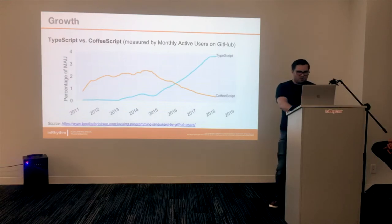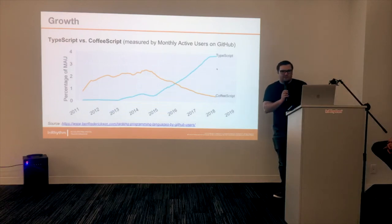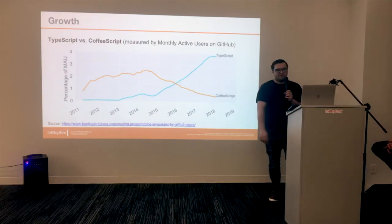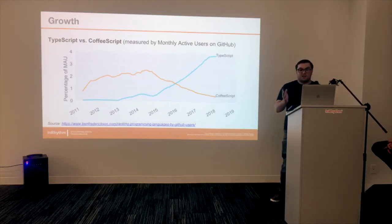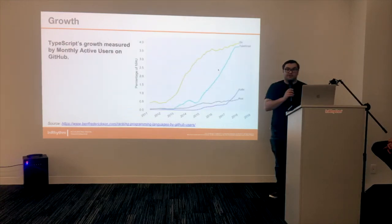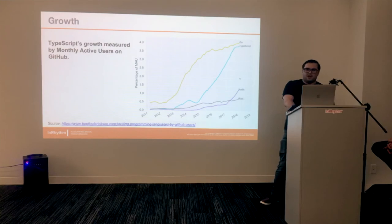I really love this chart because CoffeeScript and TypeScript are pretty much exact opposites — CoffeeScript goes down and TypeScript goes up. TypeScript is kind of like a whole other language that transpiles to JavaScript, but since it's a superset, you can really just use JavaScript within TypeScript. Another chart shows the growth among newer languages, and TypeScript is just skyrocketing.